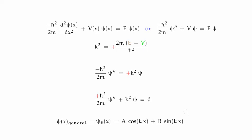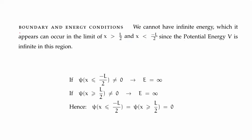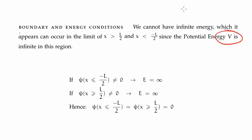These are the physical limitations on the wave function for our particular system. The boundary conditions are fairly straightforward to work out because for physical reasons we know we can't have infinite energy — that's physically meaningless. This appears to happen when x is greater than L over 2 or less than negative L over 2, because in those regions the potential energy is infinite.